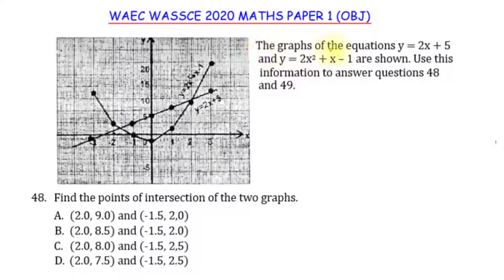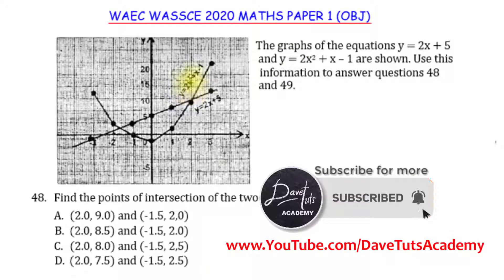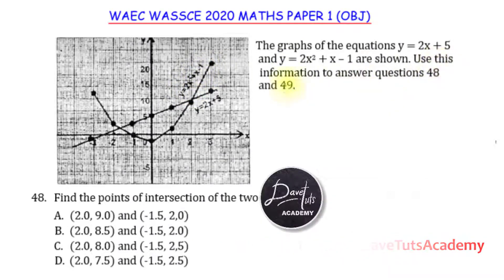In this question we are told that the graphs of the equations y = 2x + 5 and y = 2x² + x - 1 are shown. The straight line, the linear graph, corresponds to y = 2x + 5, and this curve corresponds to y = 2x² + x - 1.